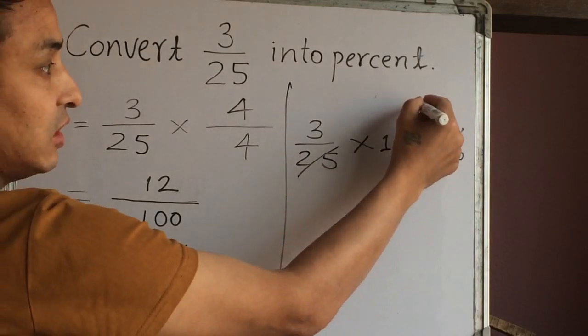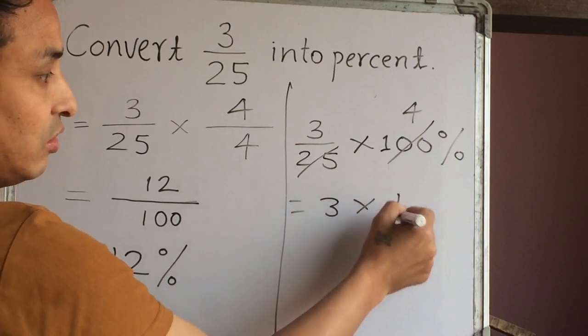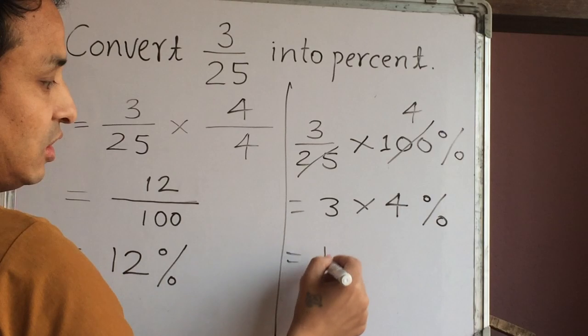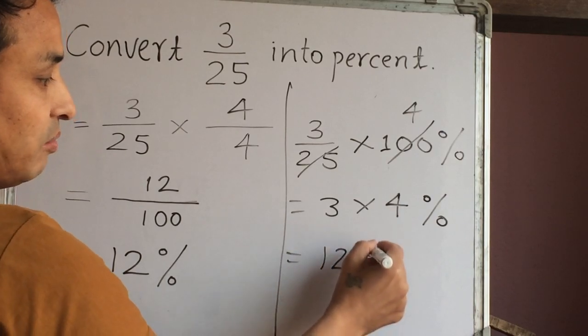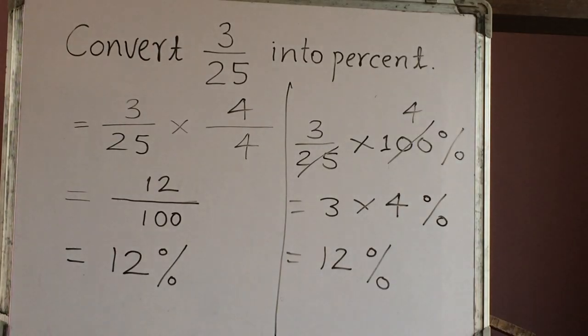So we have here 3 into 4 percent, which is 12 percent. So in this way we can convert fraction into percent.